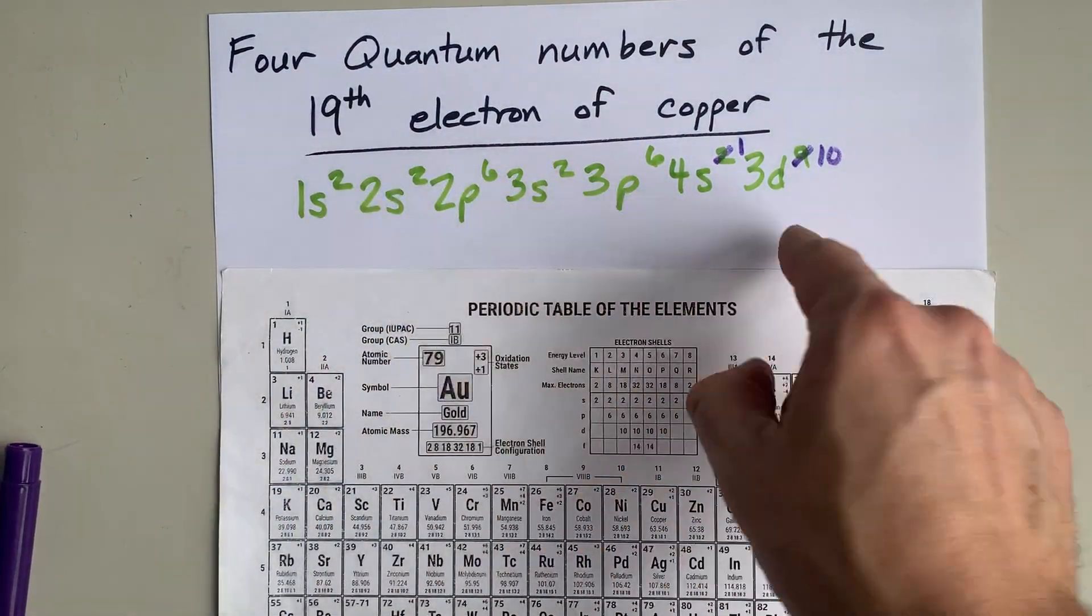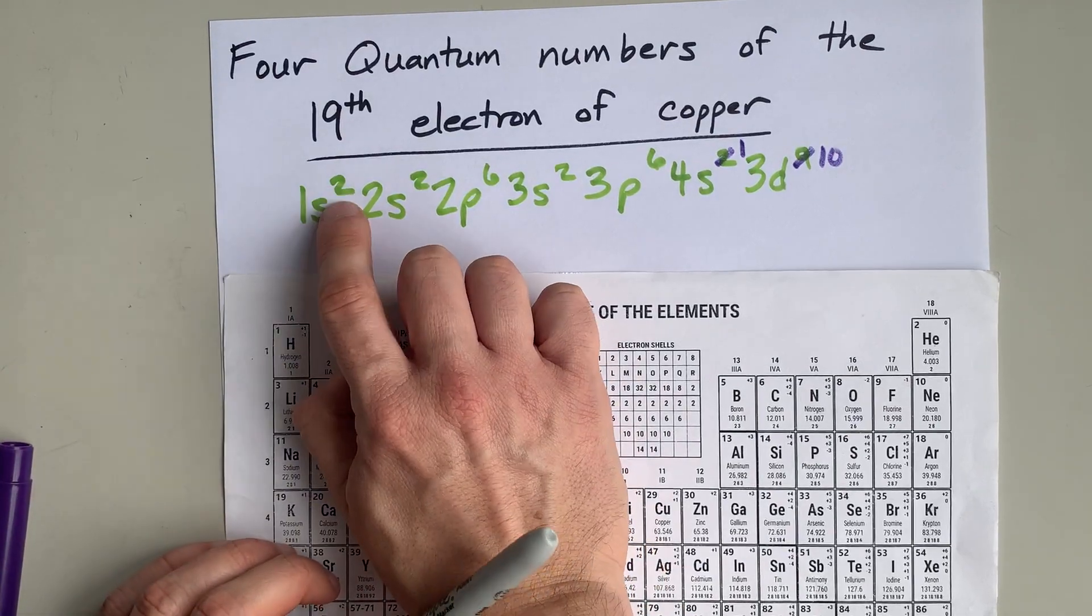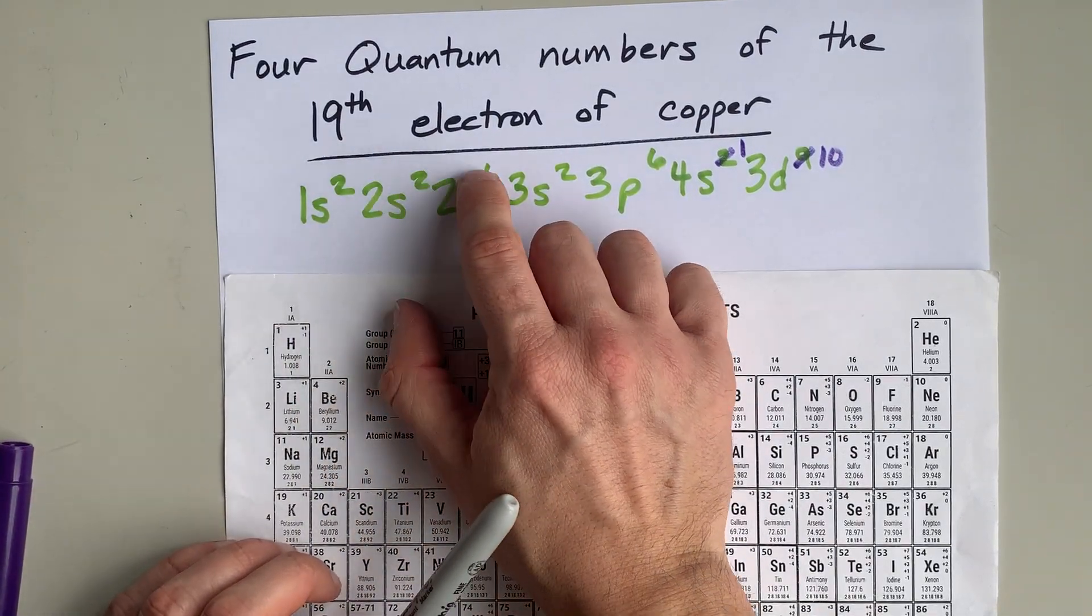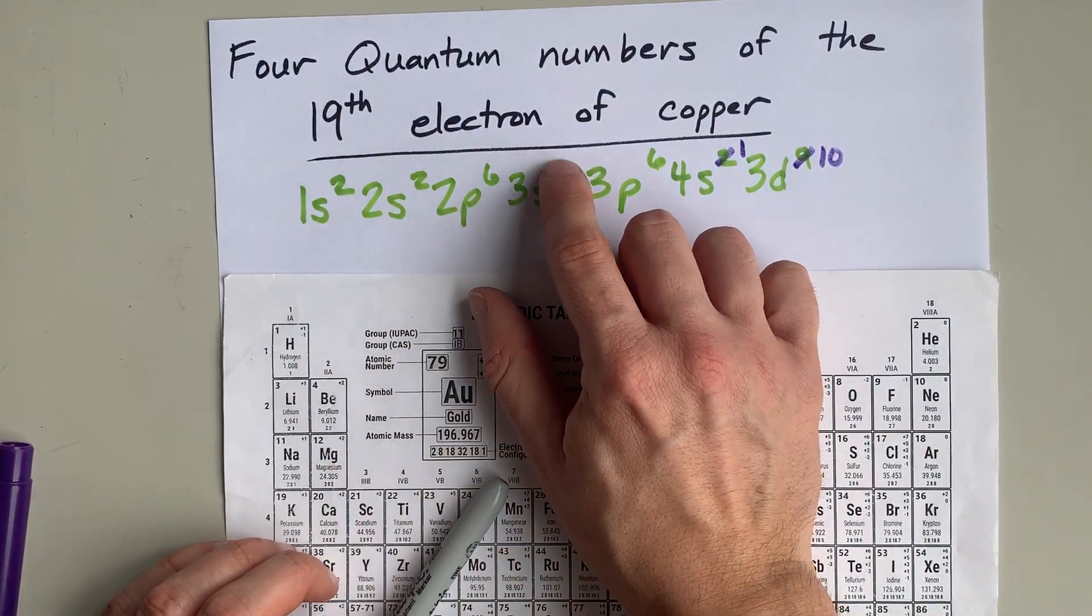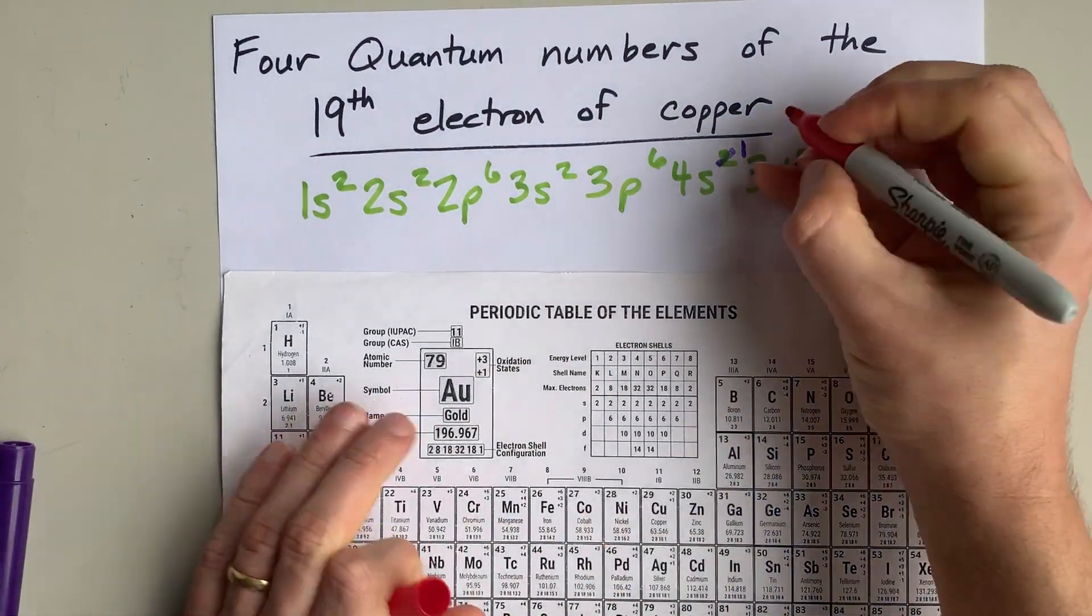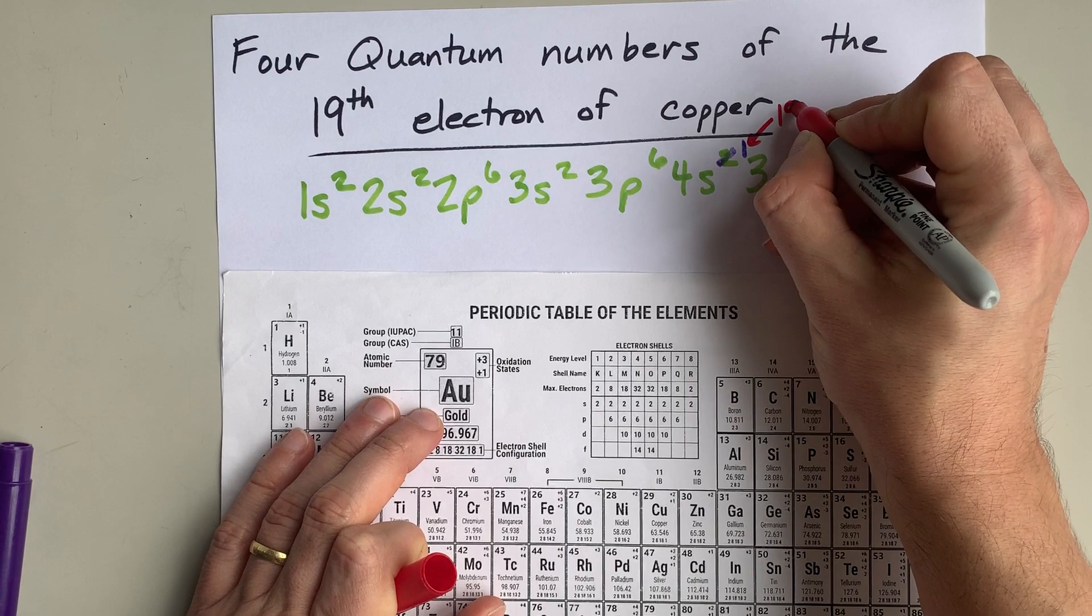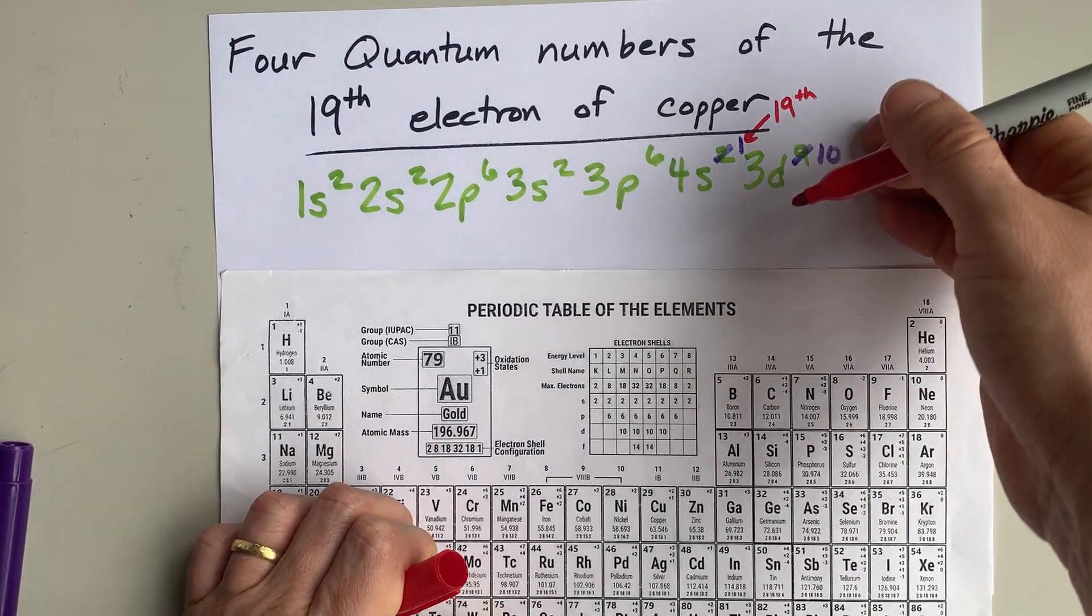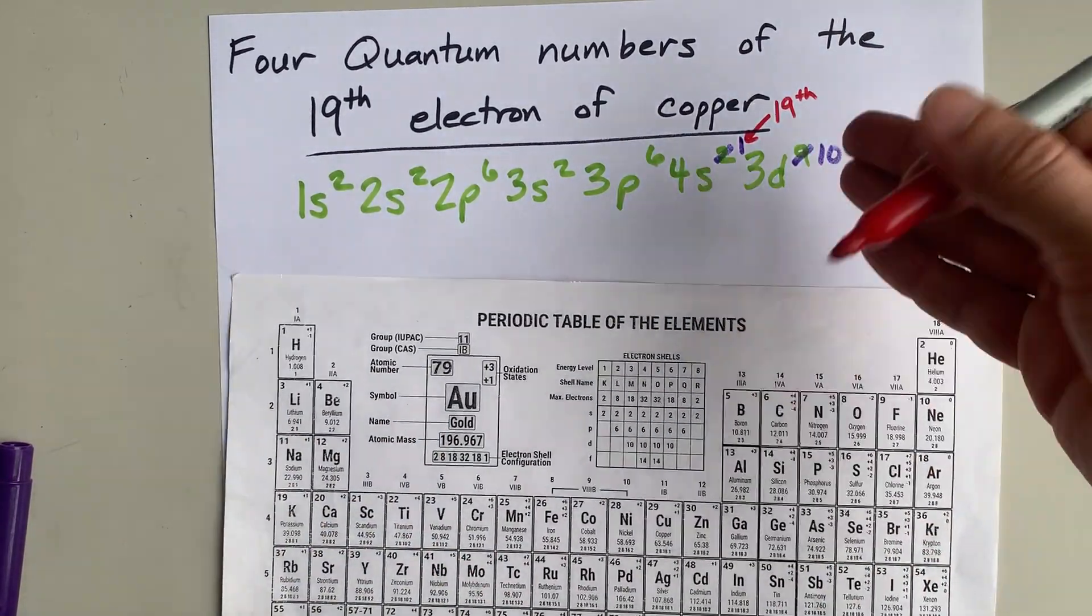Now, we have to figure out which of these is the 19th electron. Counting from 1 through 18, we find that the 19th electron is that one electron in the 4s1 orbital.